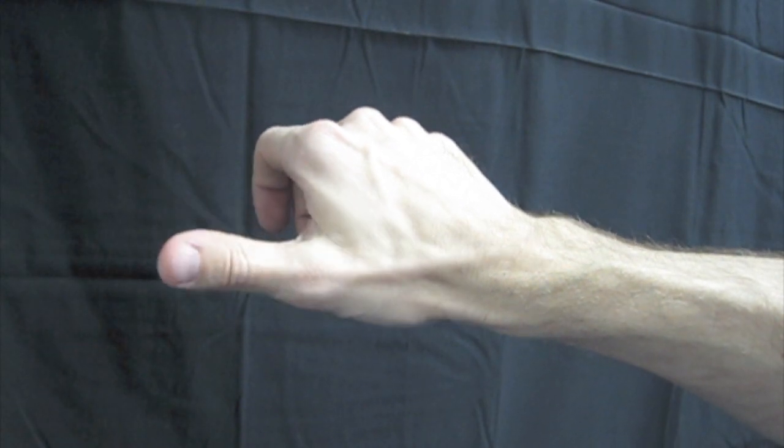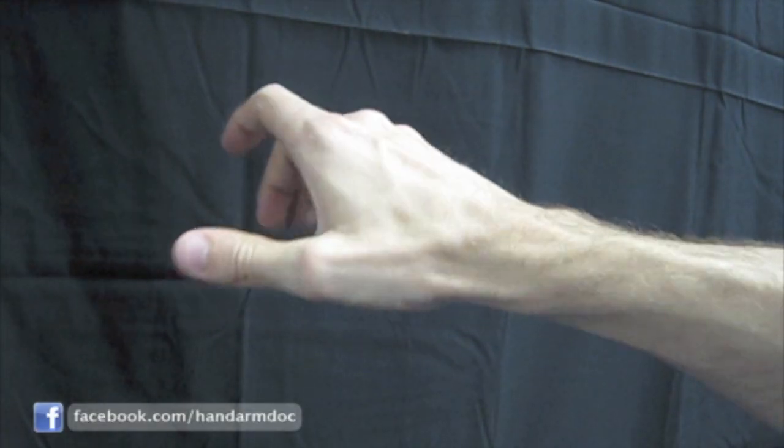As I move my thumb back and forth, you can see the tendons bulge on the thumb side of my wrist.